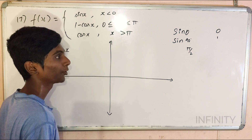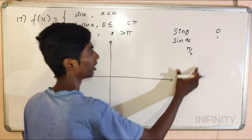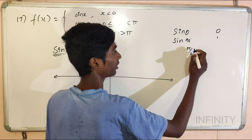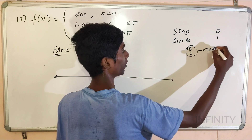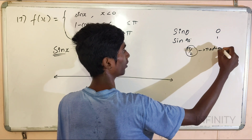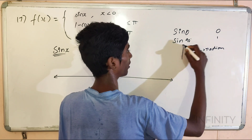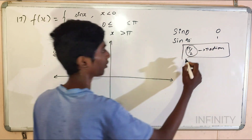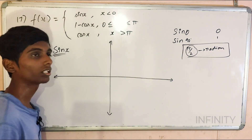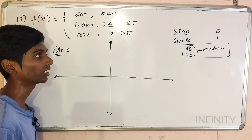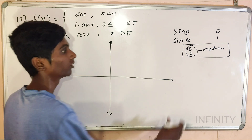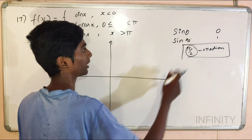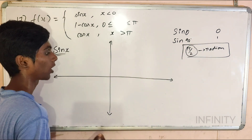Why pi by 2? Actually, pi by 2 is radians. So, we are going to talk about radians. If you want to talk about pi by 2, sin pi by 2 is nothing but 1. Now, we have to plot.